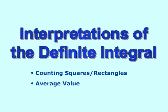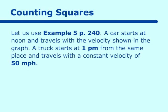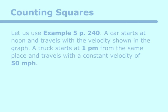In counting squares, I want you to look at the example on page 240, example number 5, which reads: a car starts at noon and travels with the velocity shown in the graph. A truck starts at 1 p.m. from the same place and travels with a constant velocity of 50 miles per hour.